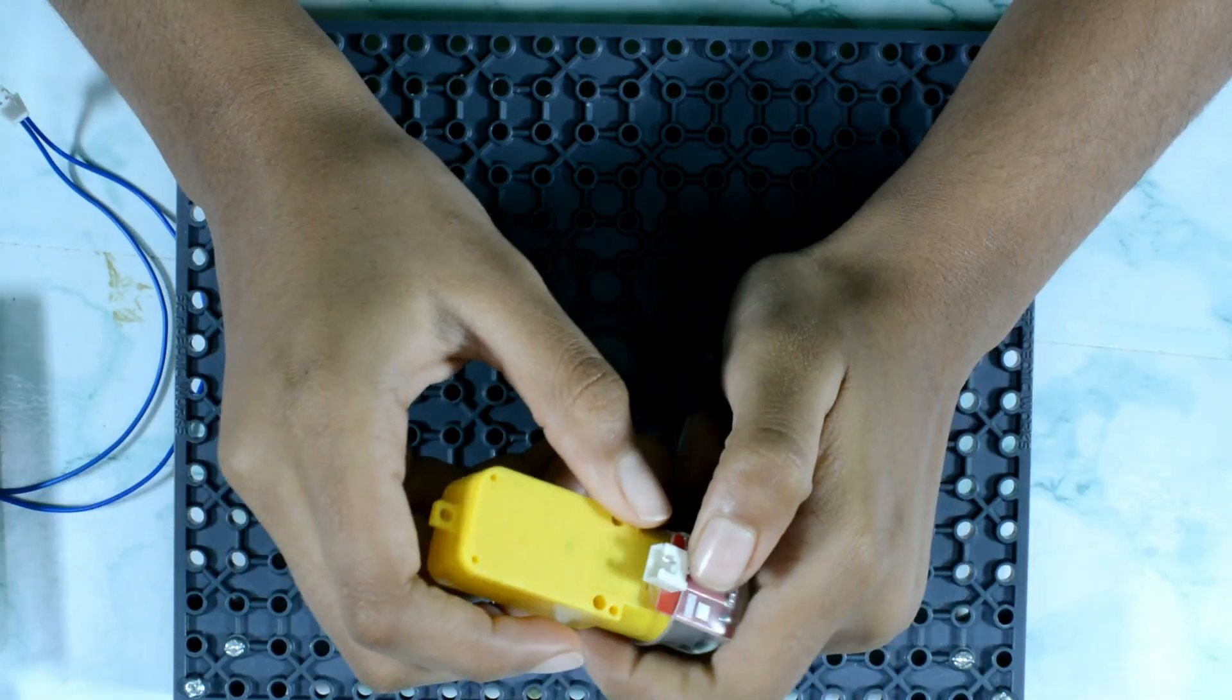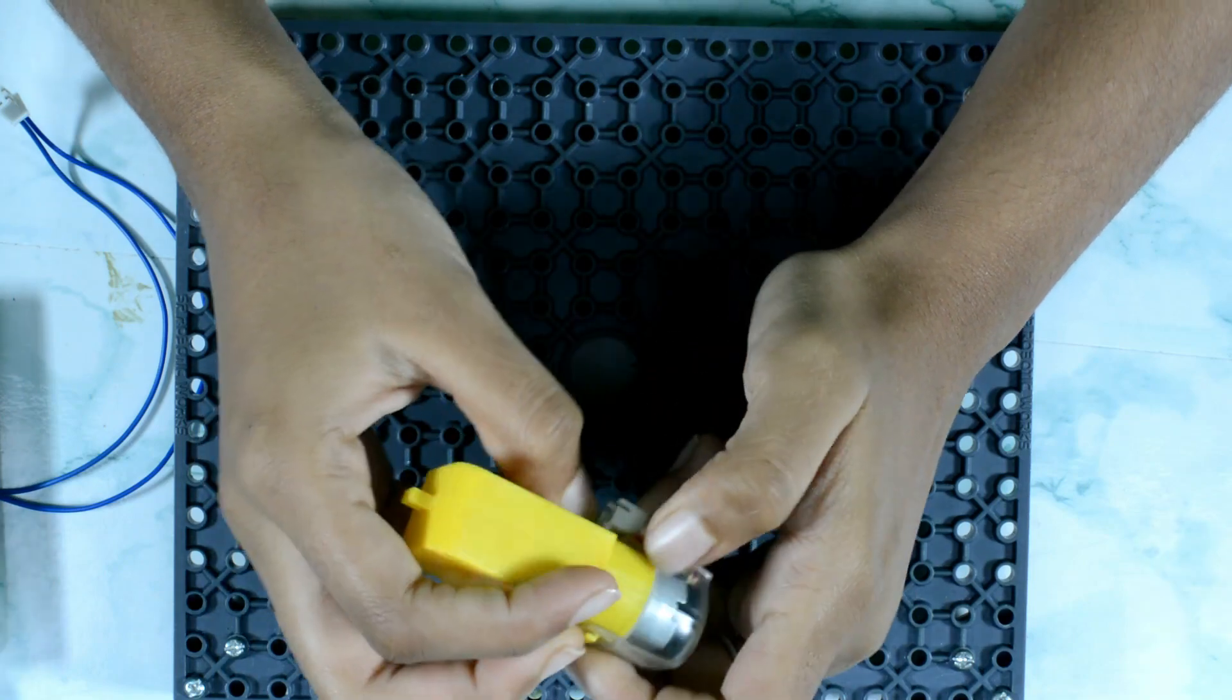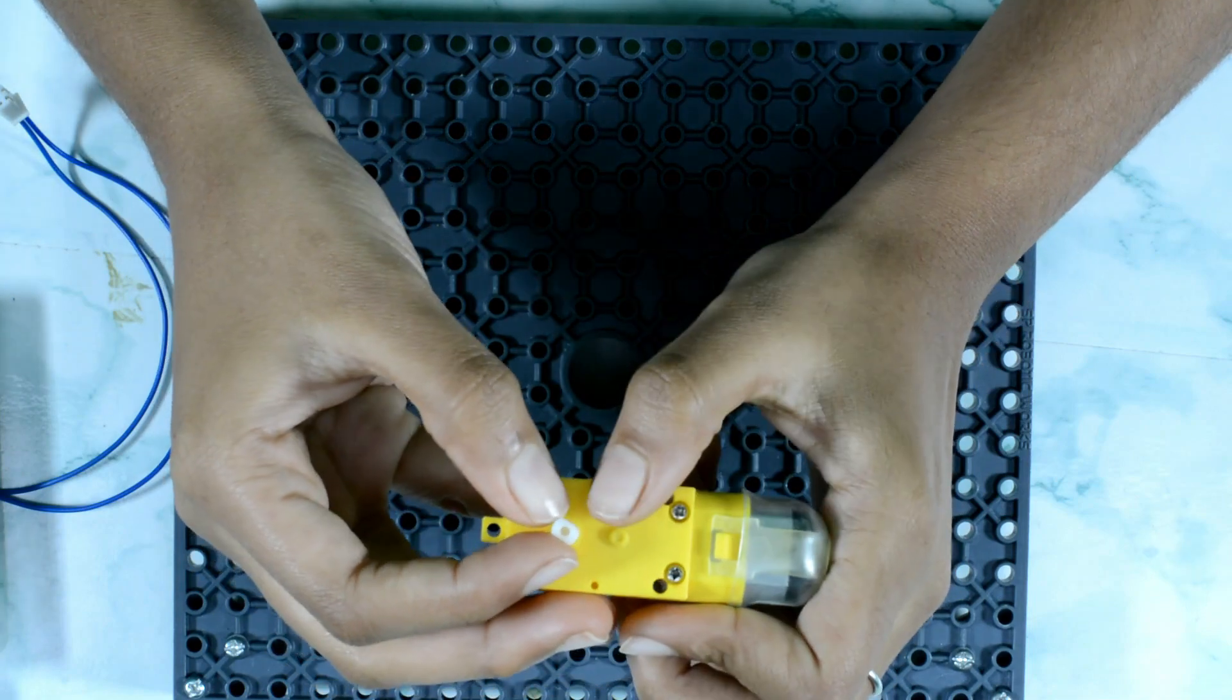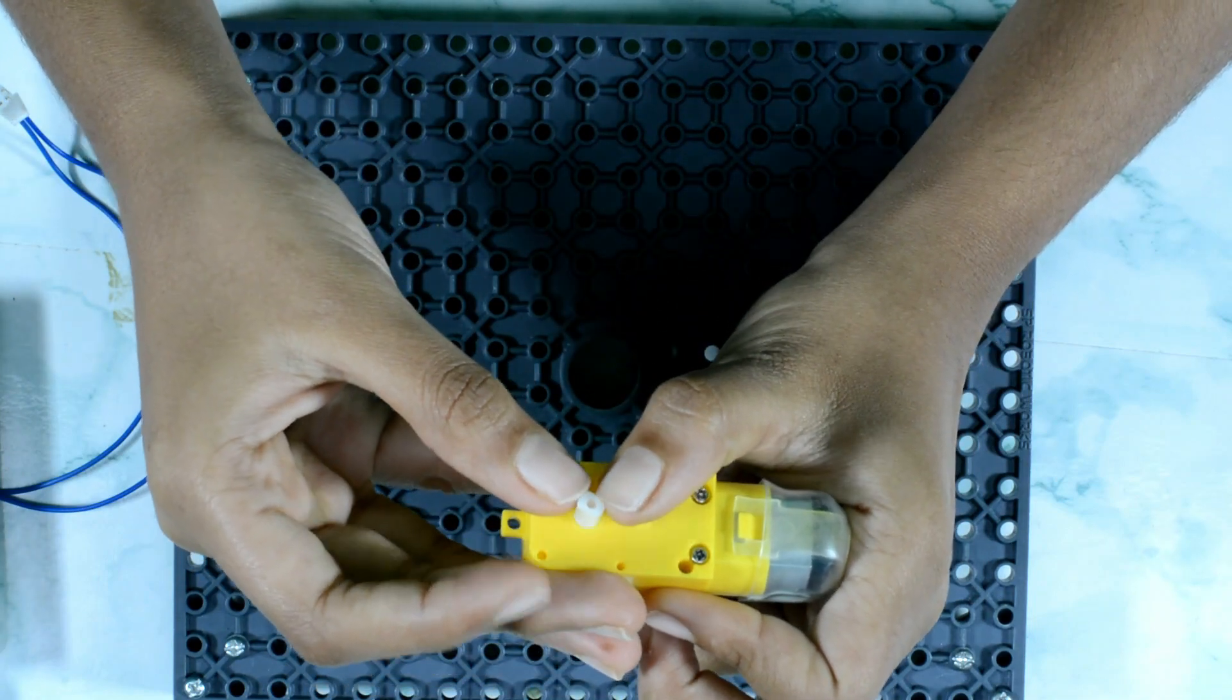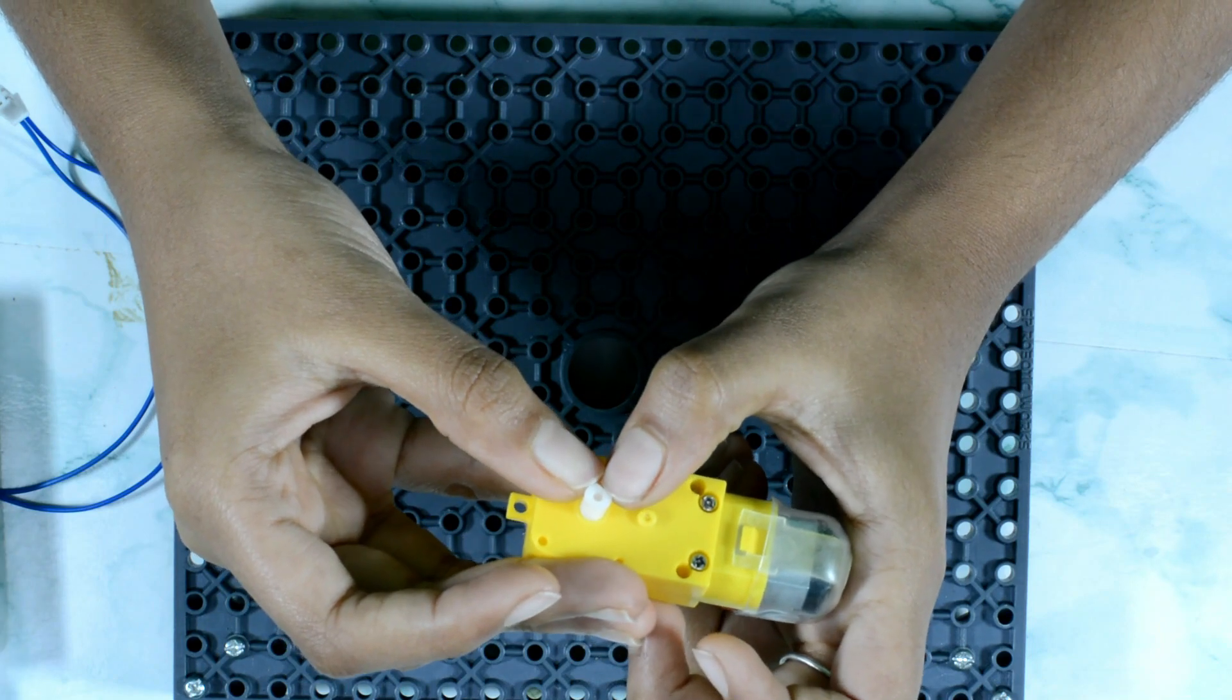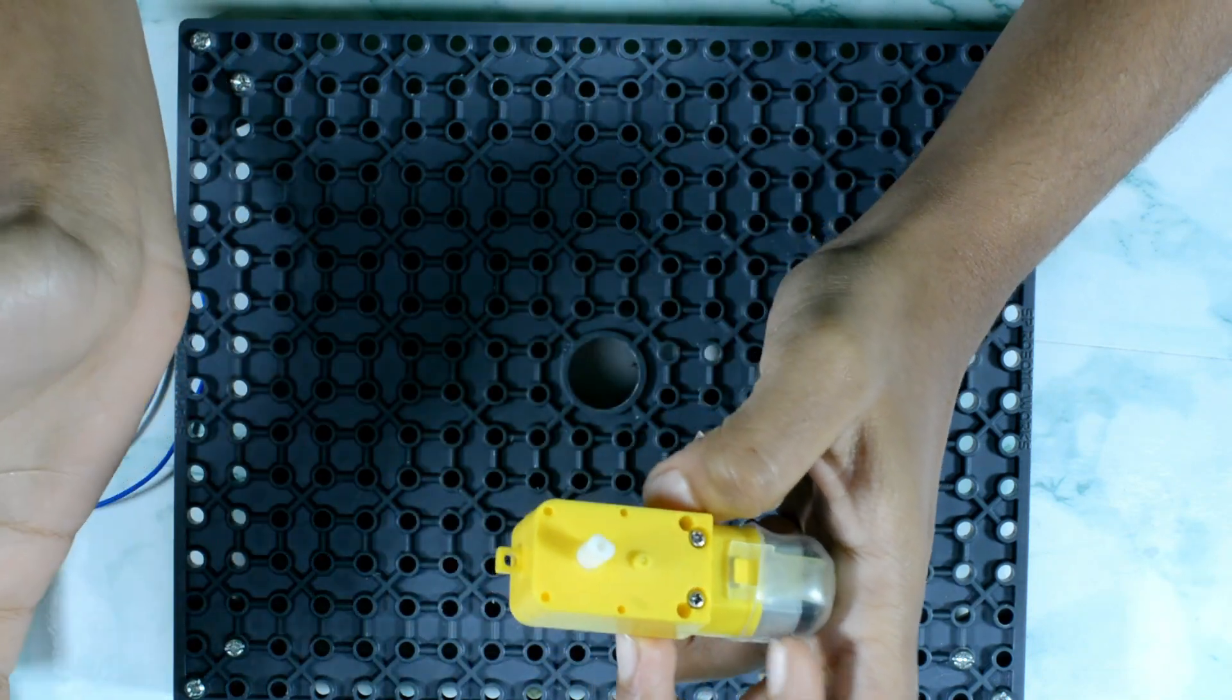First we can see that we have terminal one and terminal two here, and then if you turn around you can see a shaft here. If you notice, the shaft is not in a circle, it is in D shape. Why is it in a D shape? It is in D shape so that it can get grip of the wheel or whatever the object is.